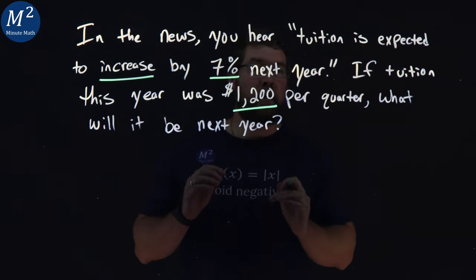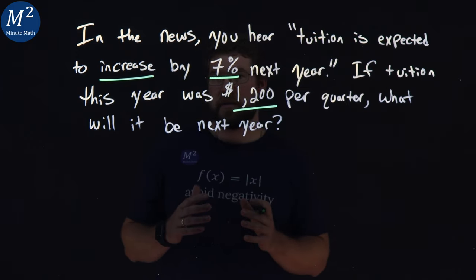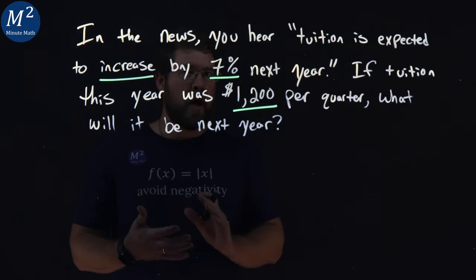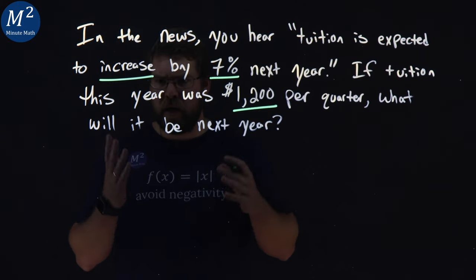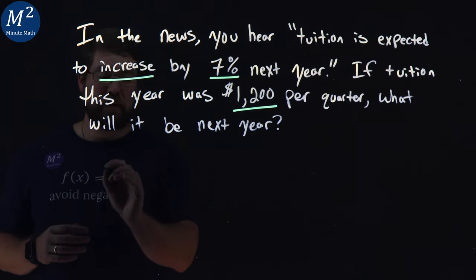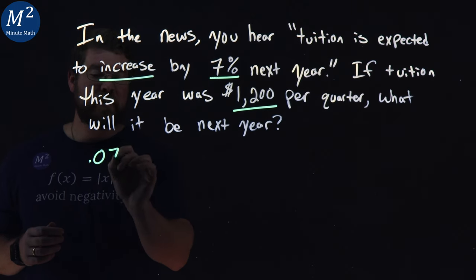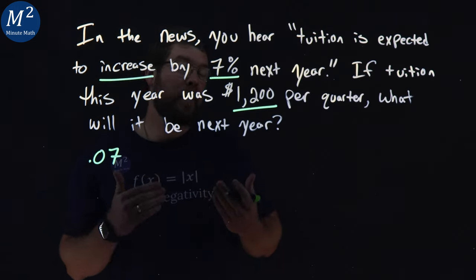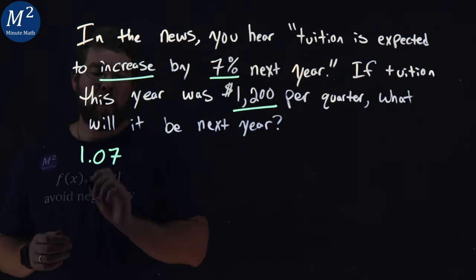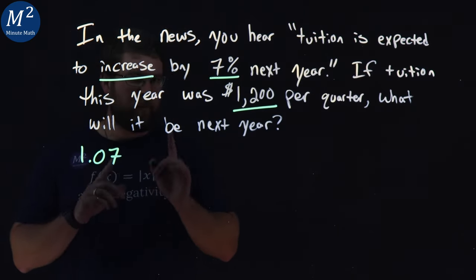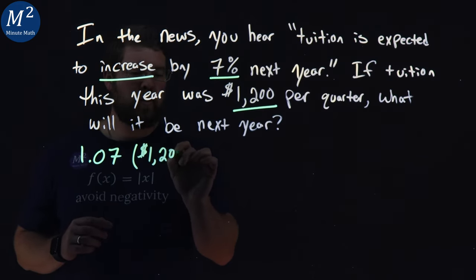There are two ways to go about this problem. The first way is we take that 7% and write it as a decimal, but we want to include the initial $1,200. So to do that, we take the 7% — as a decimal that's 0.07 — and if we want to include the amount of the current year, we add a 1. Why? Well, we're multiplying this by the $1,200.